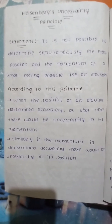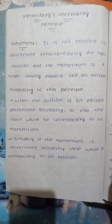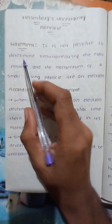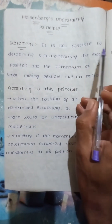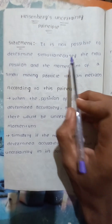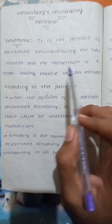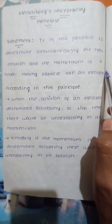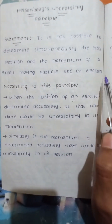This is a statement of the Heisenberg Uncertainty Principle. The statement is: it is not possible to determine simultaneously the exact position and the momentum of a small moving particle like an electron.